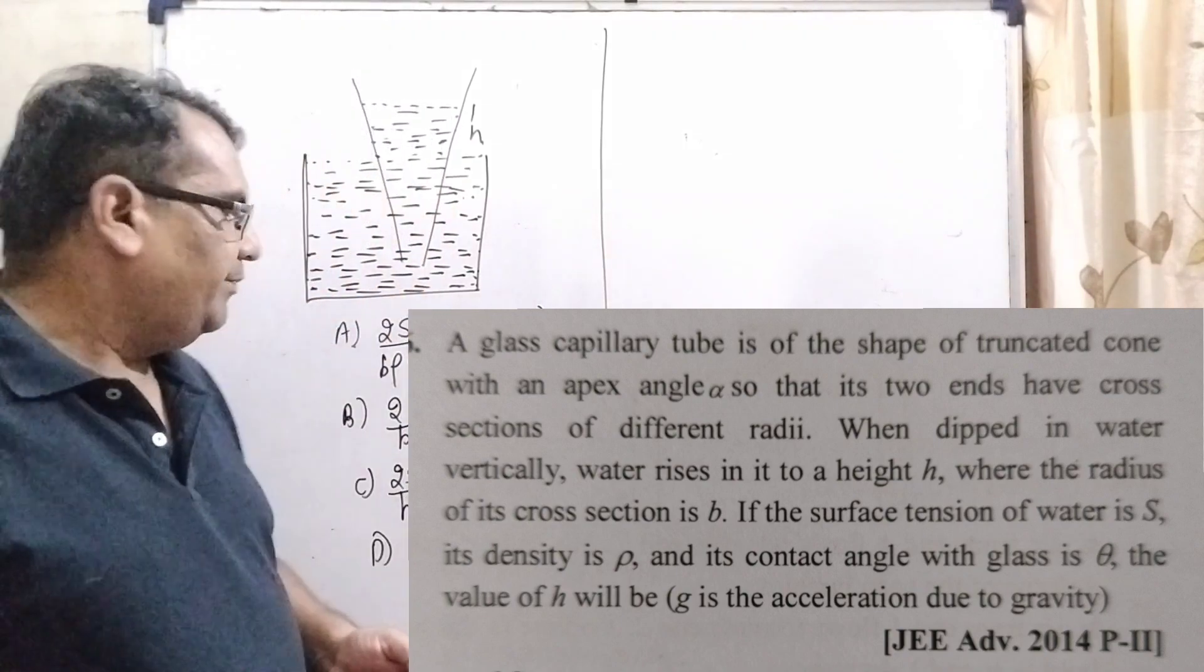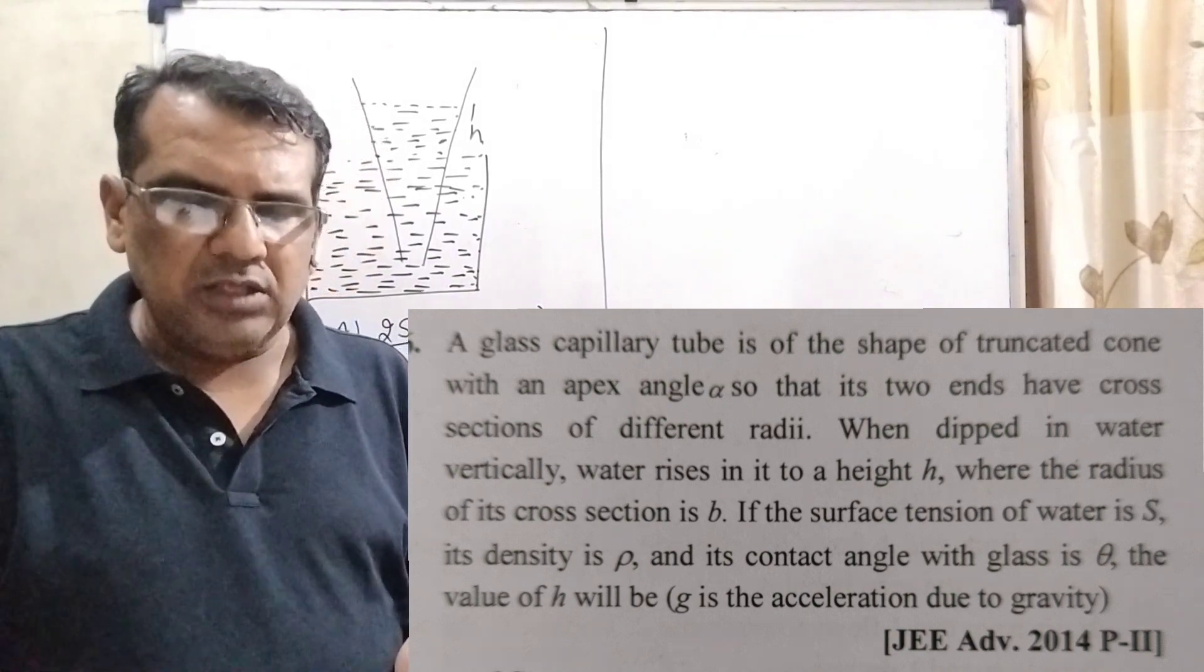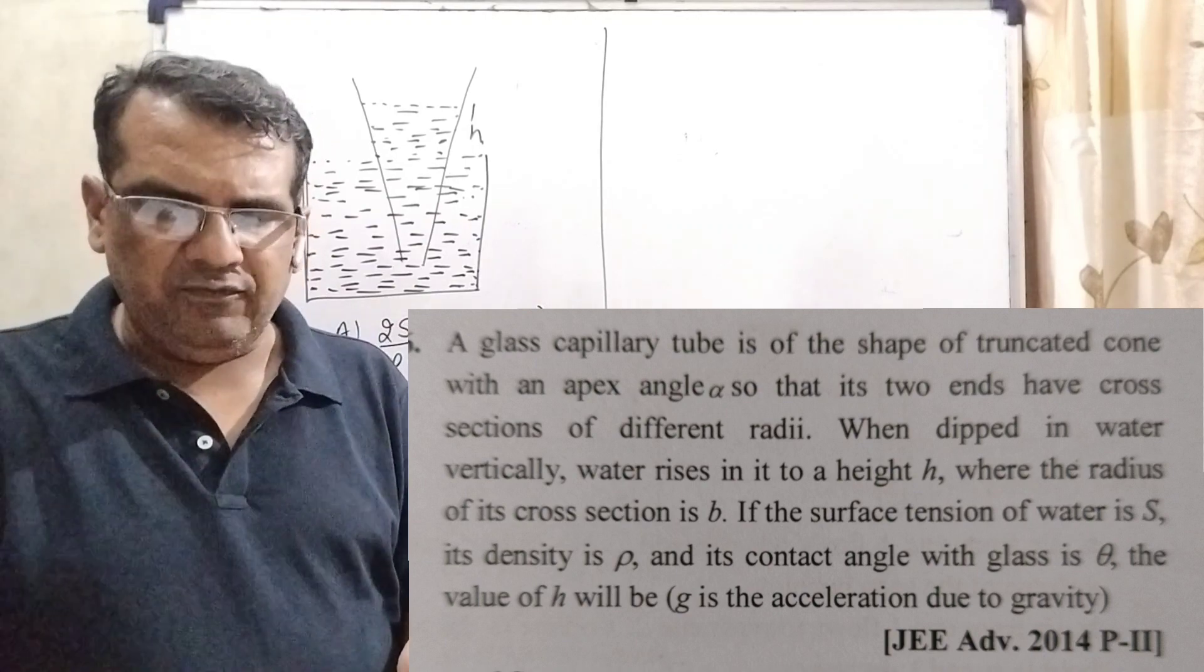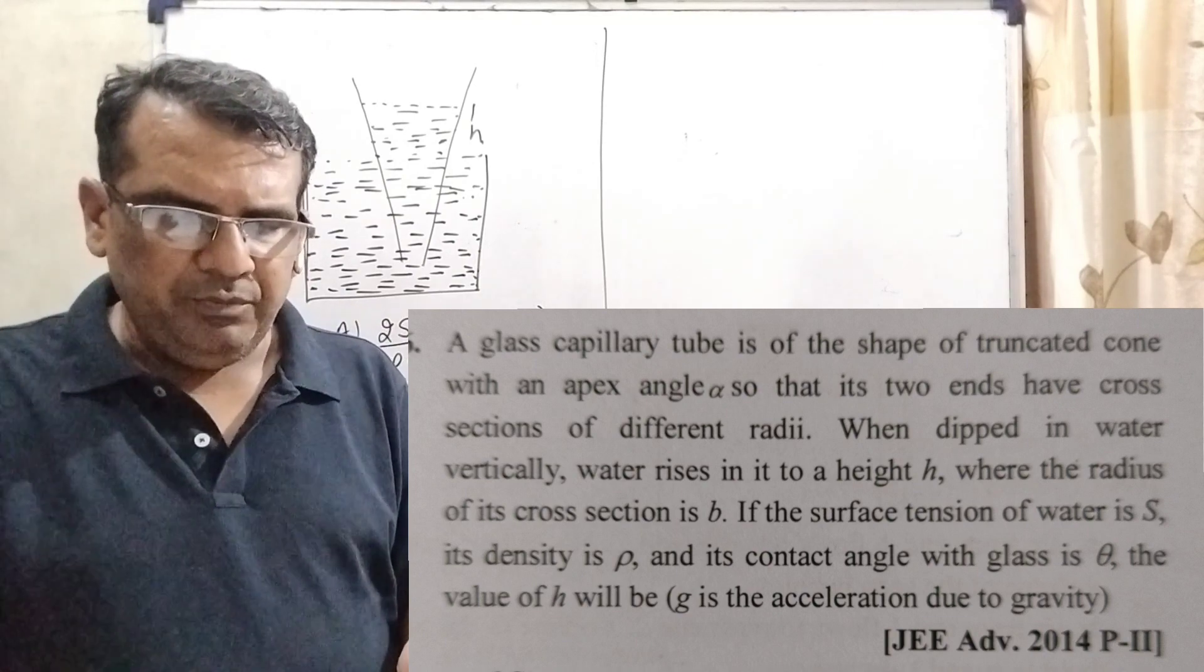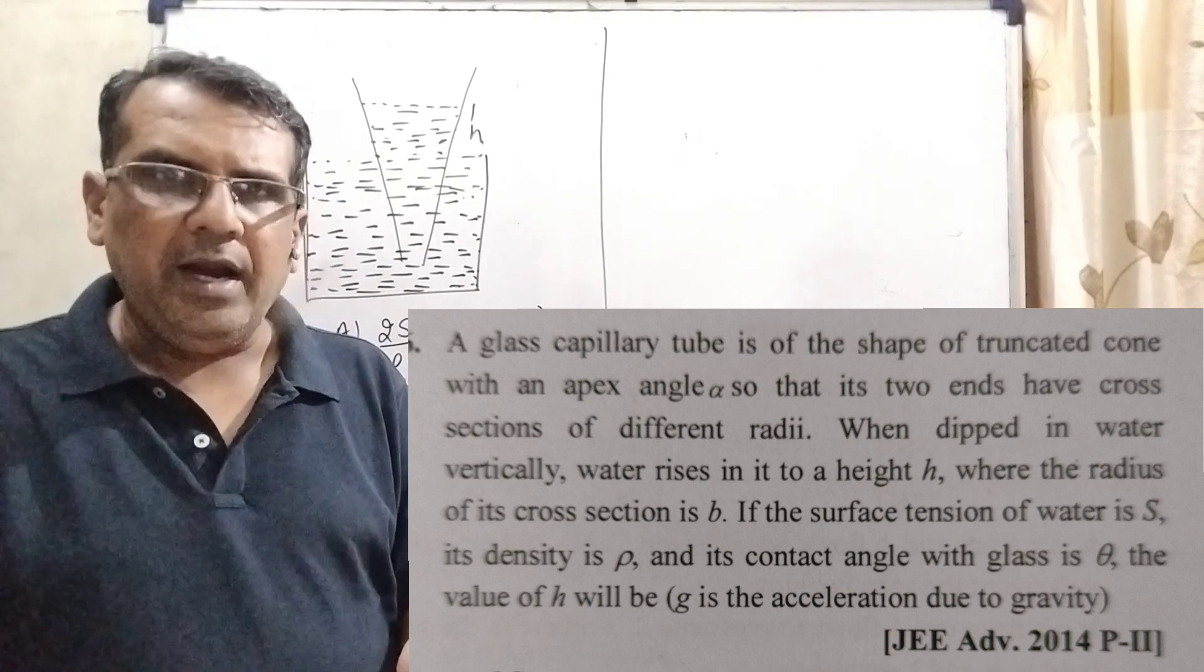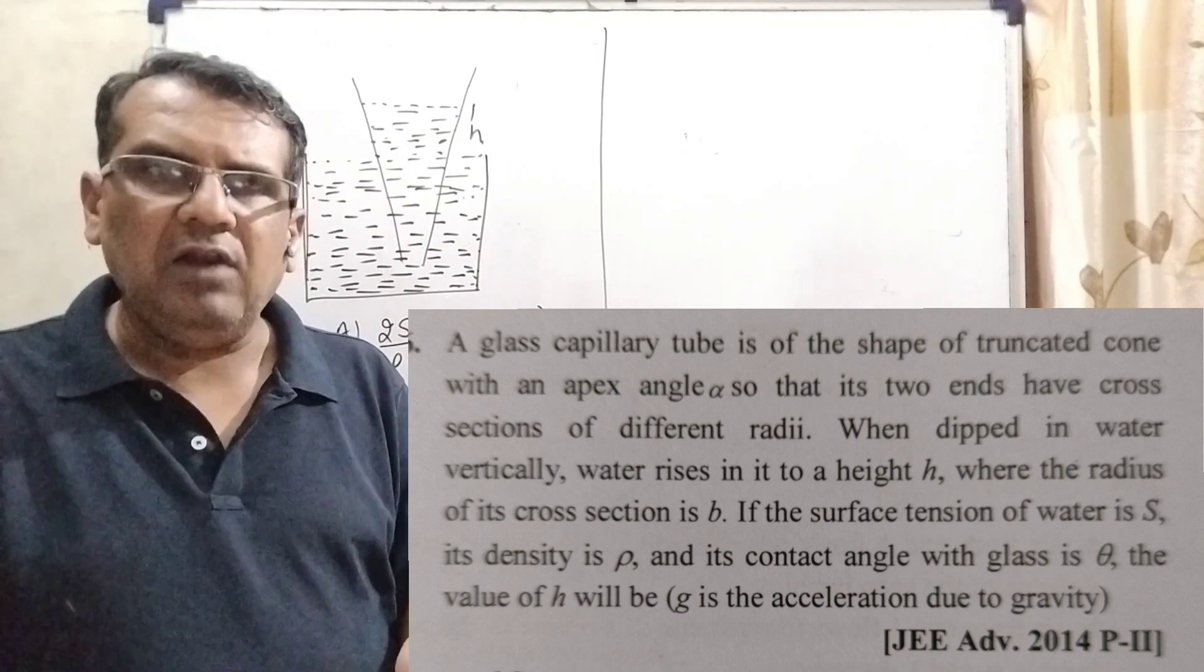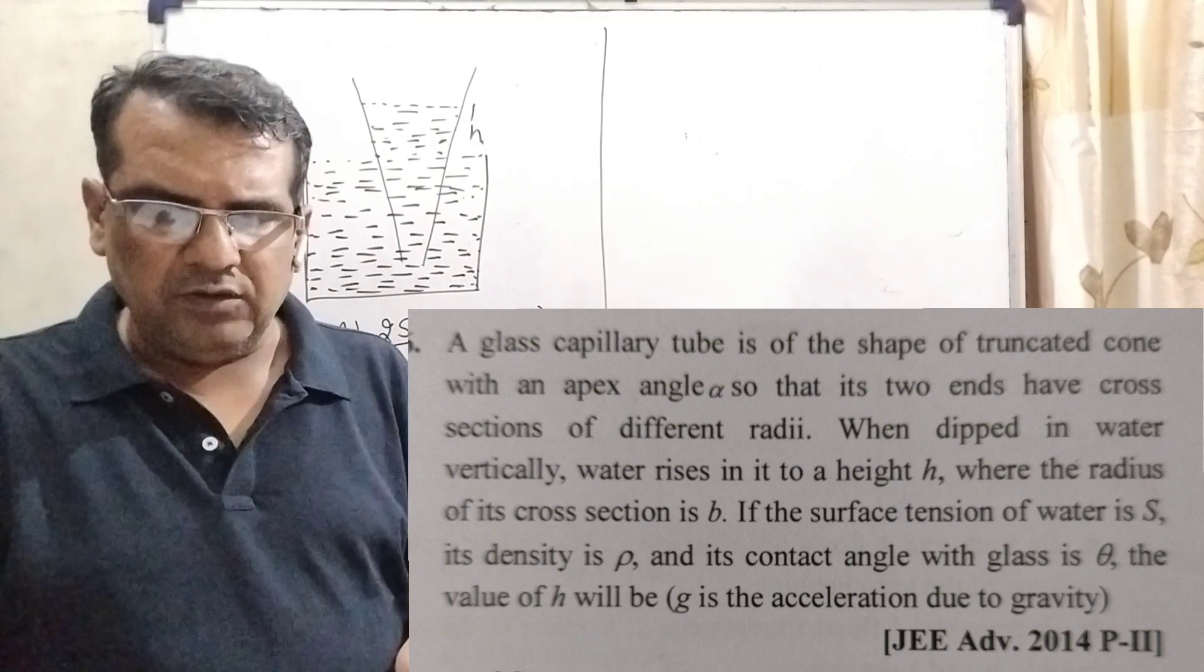Here we have given four options. The first option: 2s by b rho g cos theta minus alpha. Option b: 2s by b rho g cos theta plus alpha. Option c: 2s upon b rho g cos theta minus alpha by 2. Option d: 2s by b rho g cos theta plus alpha by 2. And this question is asked in JEE Advanced 2014.